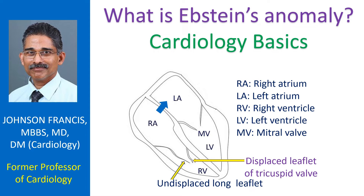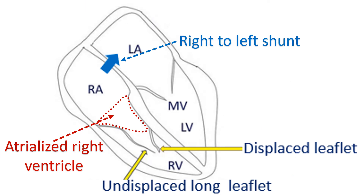The undisplaced anterior leaflet is elongated. The tricuspid valve in Epstein's anomaly can have severe regurgitation or stenosis, both of which lead to enlargement of the right atrium. As part of the right ventricle is taken away by the right atrium, the right ventricle is small in Epstein's anomaly.